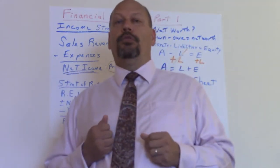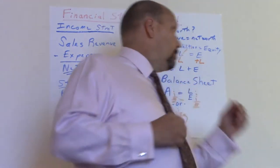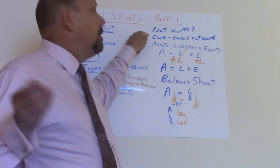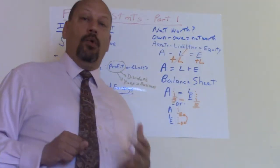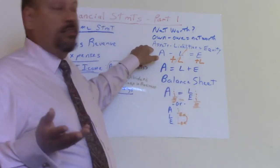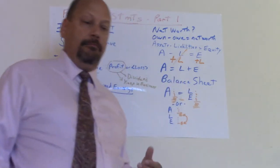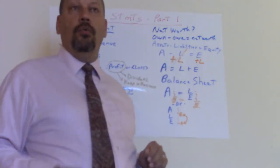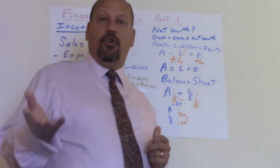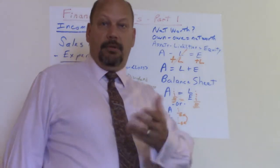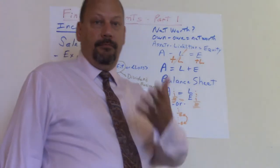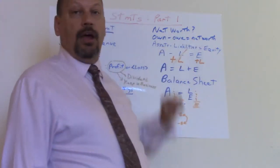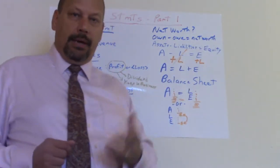Ending retained earnings leads right into the third financial statement: the balance sheet. Net worth is the layman's way of saying it — what you own less what you owe gives you your net worth. In accounting, what you own is an asset — your clothes, car, house, anything of value. What you owe are liabilities — a credit card balance, a car payment, a lien, rent, or a mortgage. Assets minus liabilities gives you net worth, or what accountants call equity.